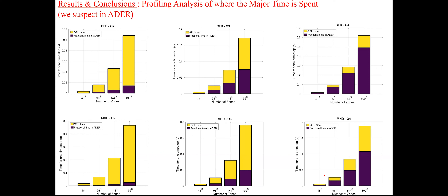We've done some profiling. This shows second, third, and fourth order CFD applications on the top row and second, third, and fourth order MHD applications on the bottom row. As you go to higher order, the full bar shows the total time taken, and the purple bar shows the time taken for ADER processing on the GPU. As you go to higher order, ADER takes up a progressively larger and larger fraction of the total processing time.